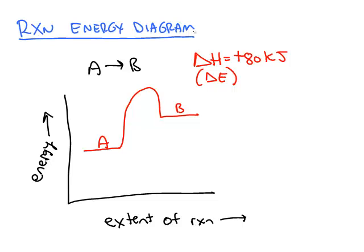We can draw an energy diagram for a reaction. Here's a simple reaction: one reactant A turns into one product B. Delta H for this reaction, let's say it's a positive 80 kilojoules. Delta H or delta E are the measurement of whether the reaction is endothermic or exothermic. A positive value for delta H or delta E means the reaction is endothermic.